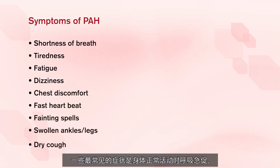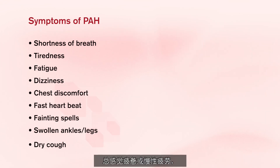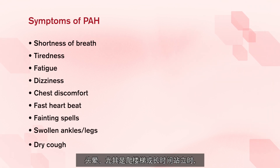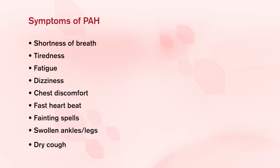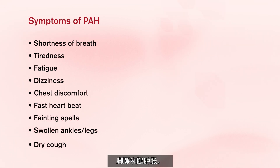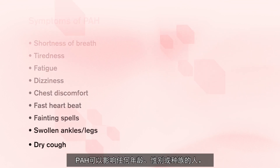The physical impact, or the signs and symptoms of pulmonary arterial hypertension, are caused by a decrease in oxygen-rich supply throughout the body and the effects of an overworked and tired heart. Some of the most common symptoms are shortness of breath during physical or normal activities, chronic fatigue, dizziness especially when climbing stairs or after prolonged standing, chest discomfort, fast heartbeat, fainting spells, swollen ankles or legs, and dry cough. PAH can affect anyone of any age, sex, or race, but is more common in women aged between 30 to 50 years old.